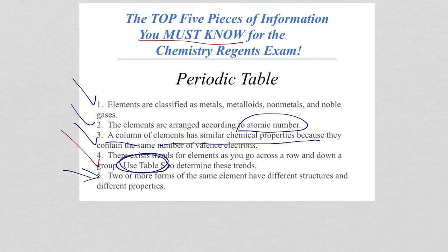All right, the last one here. Top five piece of information you have to remember for the chemistry Regents: two or more forms of the same element can have different structures, and if they're different structures, they're different properties. These are described as allotropes, although usually the questions don't ask you about the word allotrope. They ask you about this information. So for example, oxygen is O2 or ozone, O3. They fall under the two or more forms of the same element. Different structures, different properties.